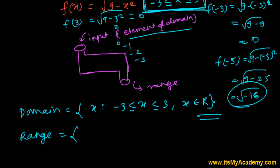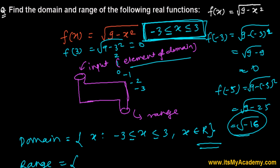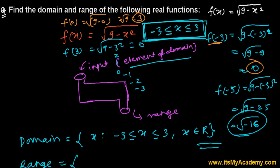Now, what will the output — the range — be? When I put -3, I got 0. When I put 0, I get √9 = 3, which is the maximum possible output. When I put 1, I get √(9 - 1) = √8 = 2√2.